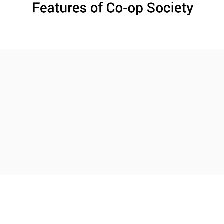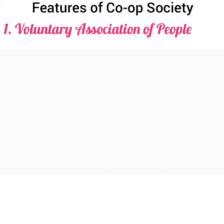Features of cooperative society. First, voluntary association. A cooperative society is a voluntary association of people who have the desire of improving their financial condition through joint action. It is a voluntary association of people who have a common interest. For example, a farmers cooperative society will have all the farmers; similarly, a producers cooperative society will have all the producers. A person can join or leave a cooperative society at any time; nobody is forced to become a member or to continue as a member.